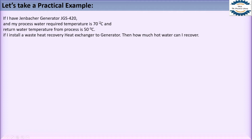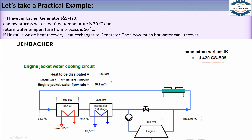We have two temperatures given on the secondary side, and the secondary flow rate is what we need to calculate. For the primary side we have no data, so we will take the technical data sheet of the Jenbacher JGS420. From that data sheet: the hot water flow rate on the primary side is 40.1 m³/hr, the water returning to the generator is 75°C, and the hot water coming out of the generator is 95°C.